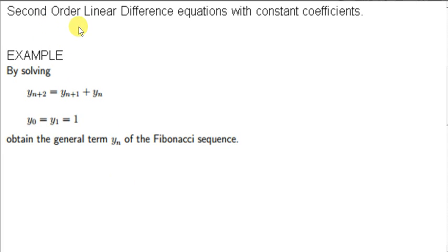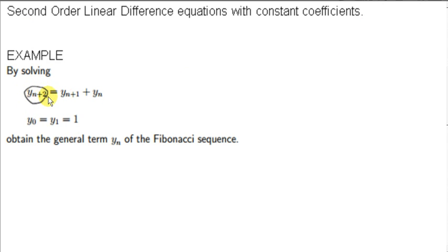In this video, we will look at some second-order linear difference equations with constant coefficients. I explained in the last video what is meant by a first-order linear difference equation with constant coefficients. Here we just have a second-order term — the term with the highest order is a second-order term, y sub n plus 2. So here we have a second-order difference equation.